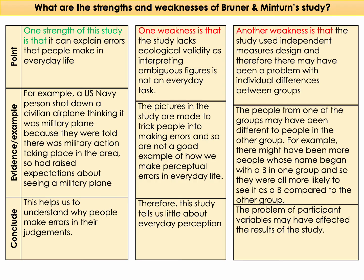You only need two of these, but here is some extra. A strength of the study is that it can explain errors people make in everyday life. A good example is a Navy person in America who shot down an aeroplane thinking it was a military plane because they were informed that military action was taking place in the area — their expectation led them to misidentify the aircraft. This also explains why students sometimes read what they expect rather than what is actually written, linking to knowledge of schemas.